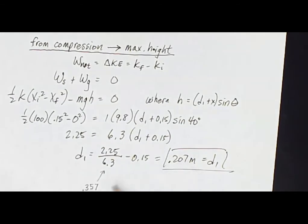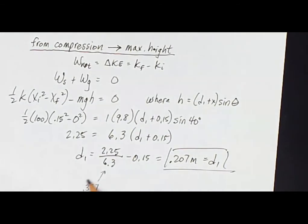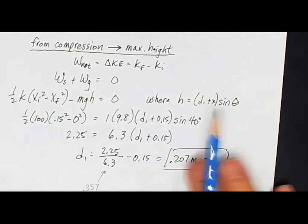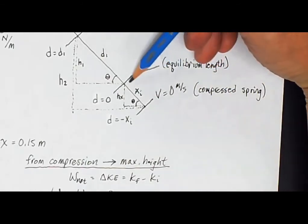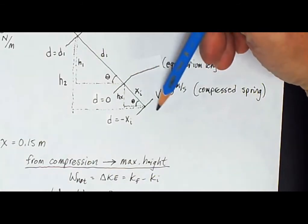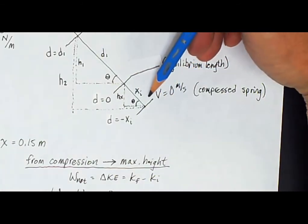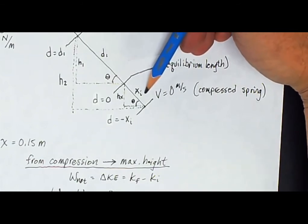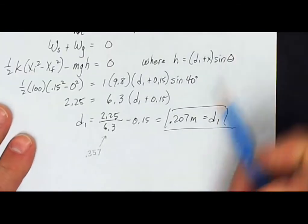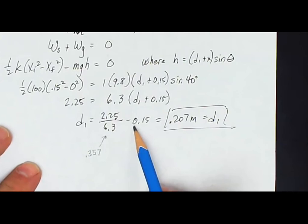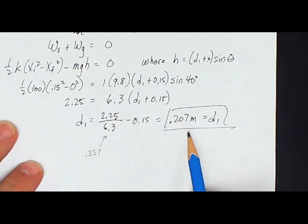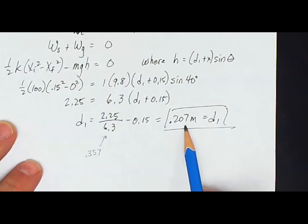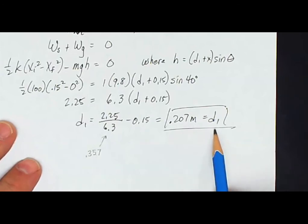A very common mistake was to give 0.357 meters as the answer. Keep in mind that is the entire distance of d1 plus x-initial, not just d1. That was a loss of one point. What you needed to do was take 0.357 and subtract x-initial from it to get the answer: the block goes 20.7 centimeters, or 0.207 meters, above the equilibrium length of the spring.